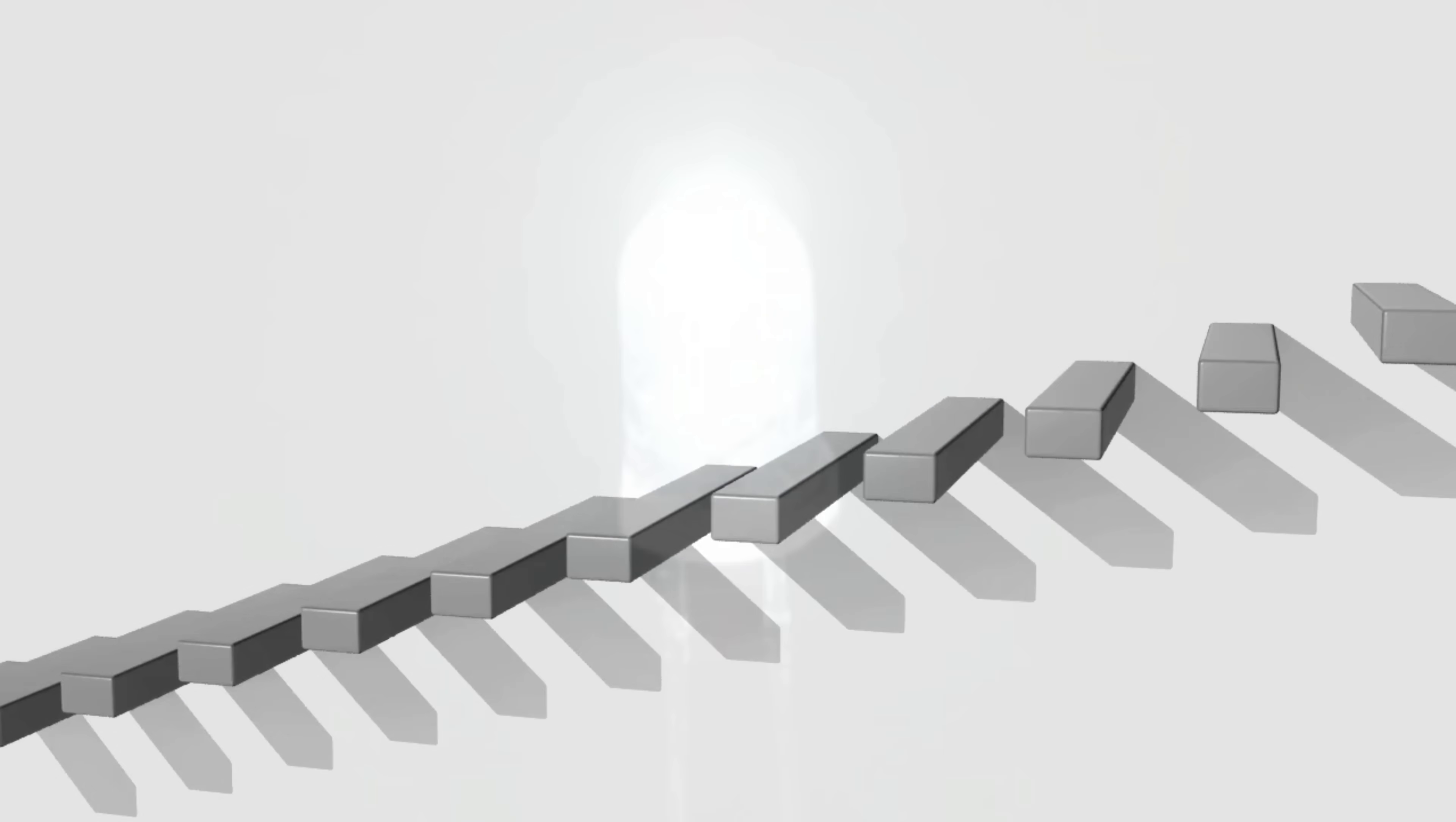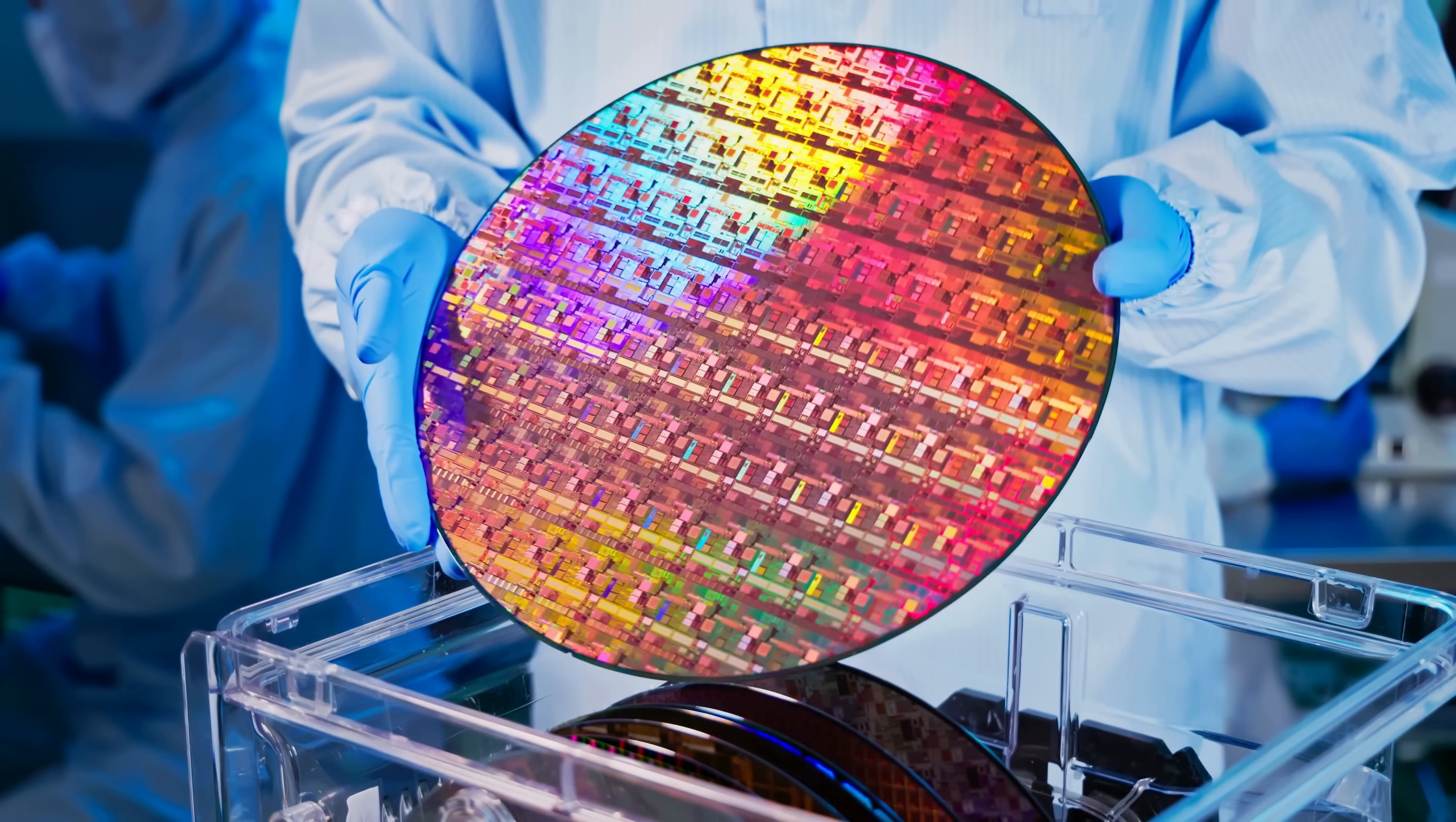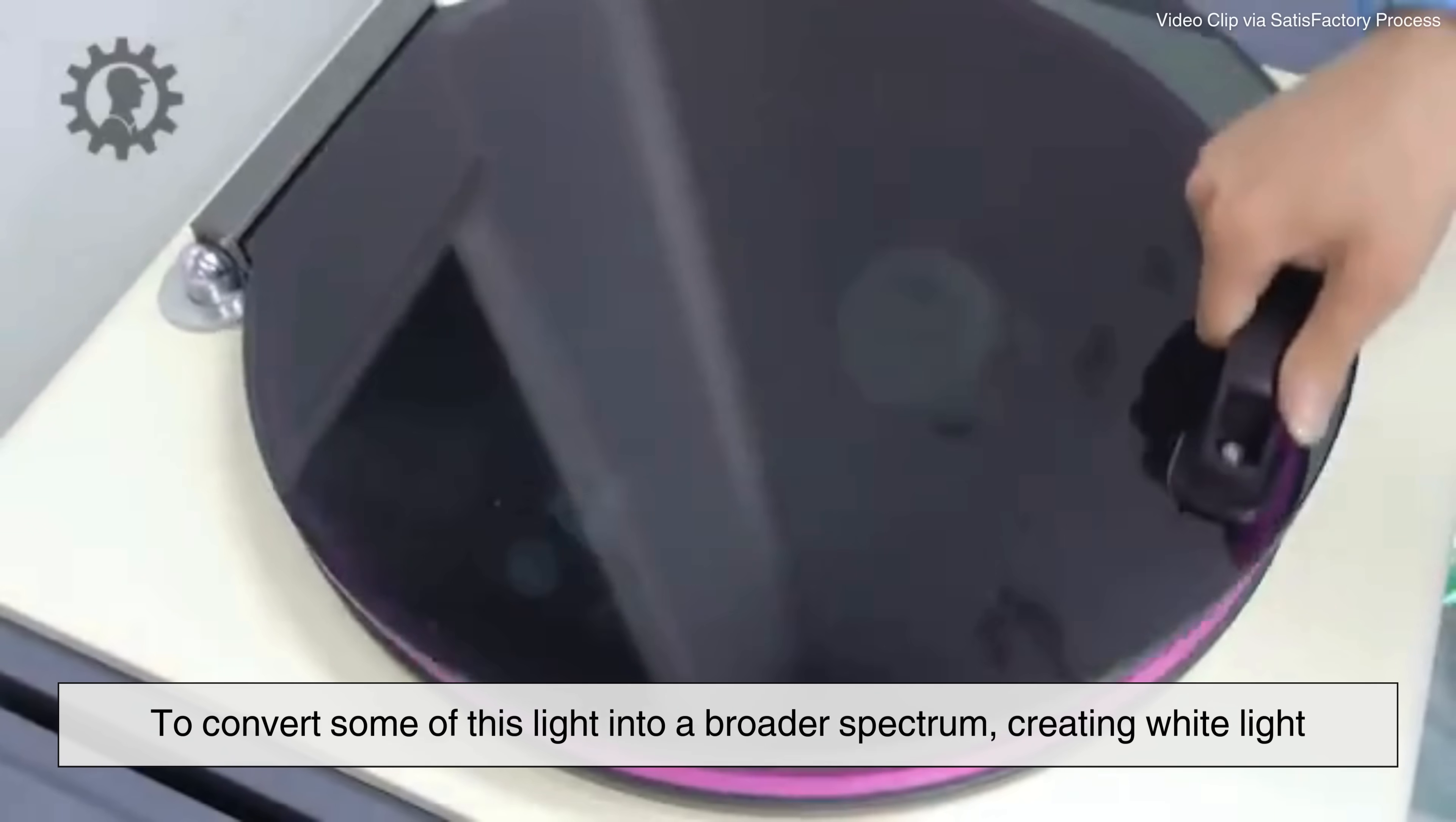For white LEDs, an additional step is required, applying a phosphor coating. Since LEDs naturally produce light in specific wavelengths, a phosphor layer is used to convert some of this light into a broader spectrum, creating white light.